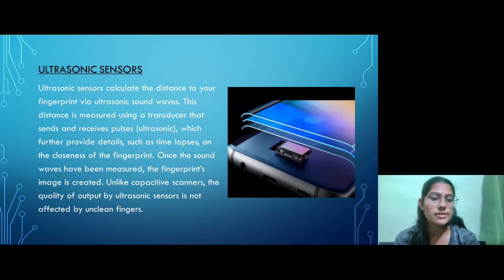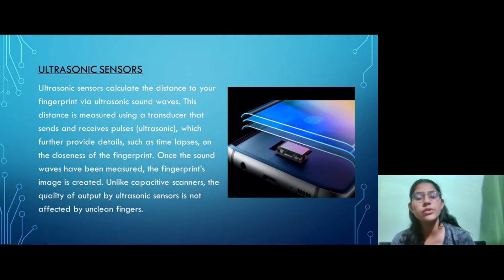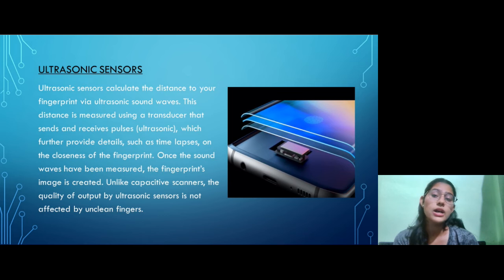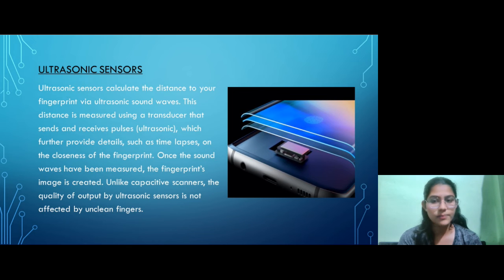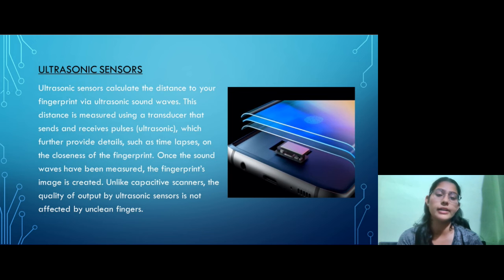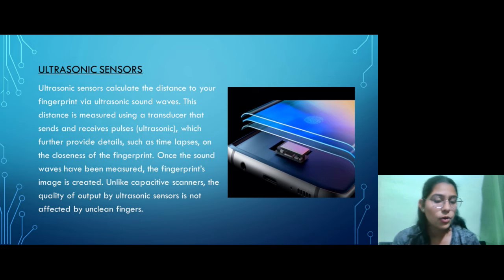The next sensor is the ultrasonic sensor. Nowadays, ultrasonic sensors are being used a lot in smartphone security systems. The ultrasonic sensor calculates the distance to your fingerprint via ultrasonic sound waves. Once the sound waves have been measured, the fingerprint's image is created. Unlike capacitive scanners, the quality of output by an ultrasonic sensor is not affected by unclean fingers.